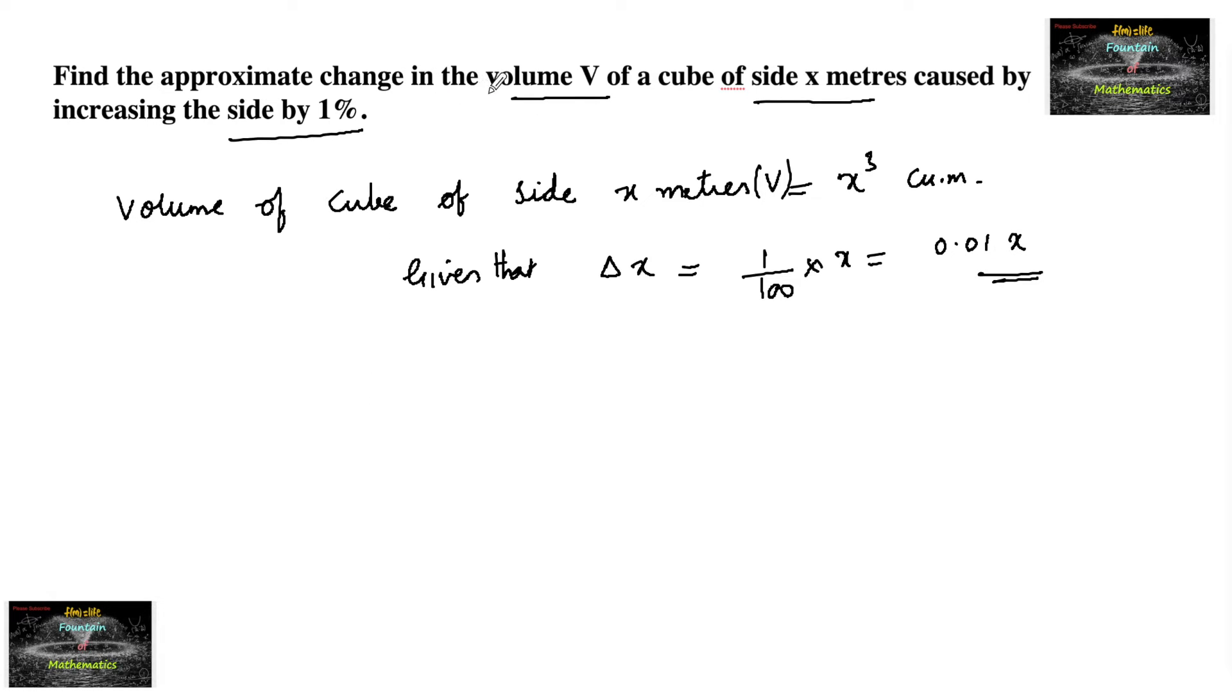We need to find the approximate change in the volume. dV, the approximate change in volume, equals dV/dx times Δx.